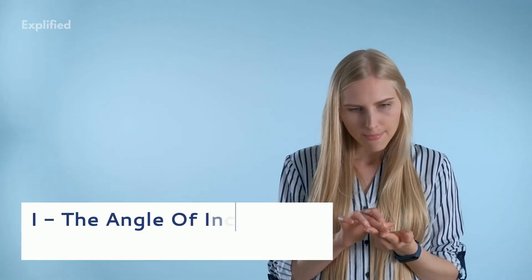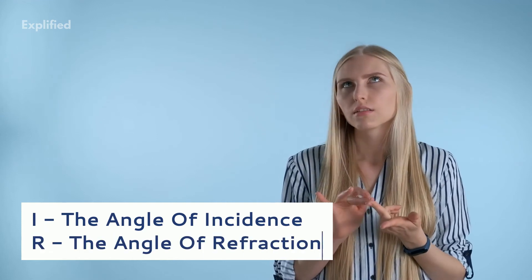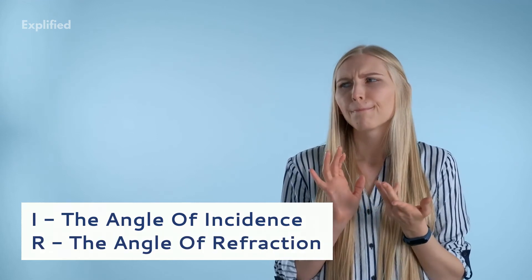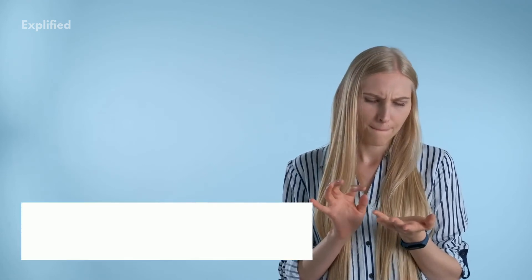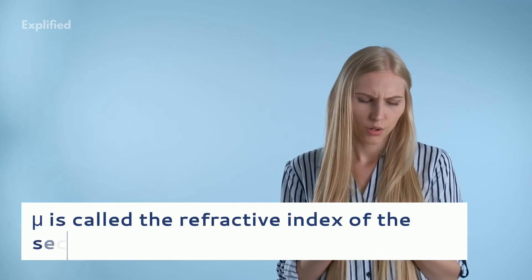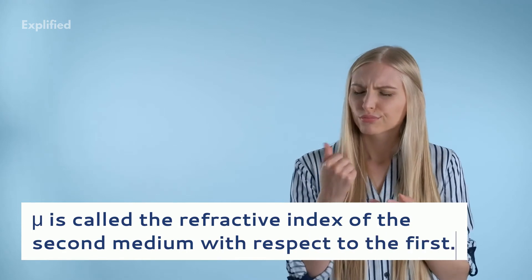If i is the angle of incidence and r the angle of refraction, then according to the second law, sine i by sine r is equal to mu, a constant. The constant mu is called the refractive index of the second medium with respect to the first.